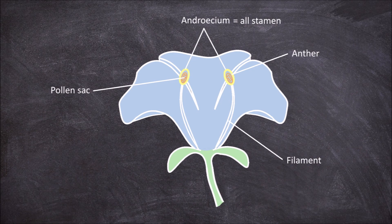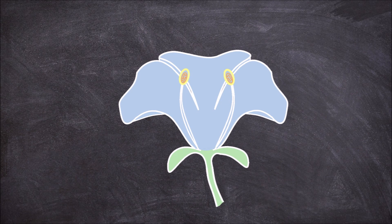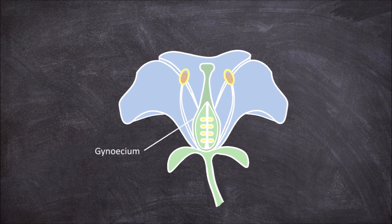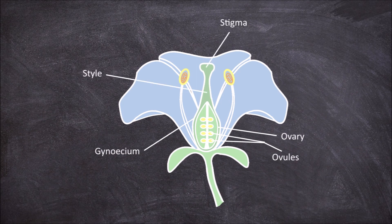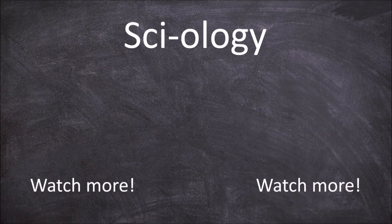The fourth and final whorl is the innermost whorl and consists of the female reproductive organs. This is the carpal whorl and is called the gynoecium. The carpal, also known as the pistil, consists of the ovary which houses the ovules. The carpal also consists of the style and the stigma.